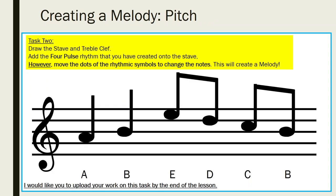So, creating a melody — pitch. For Task 2, I would like you to draw the stave and treble clef, as you can see below and as you've done before. Once you've done that, add your four-pulse rhythm that you've created onto the stave. You can see I've still got my four-pulse rhythm there: tea, tea, coffee, coffee. I've added it to the stave, and you should move the dots of the rhythmic symbols to change the notes — this will create a melody.